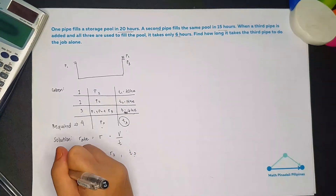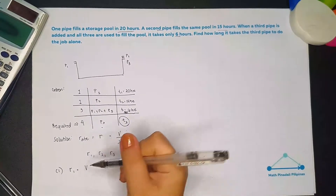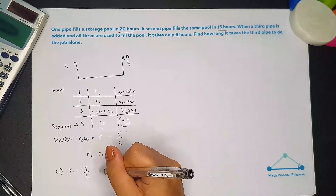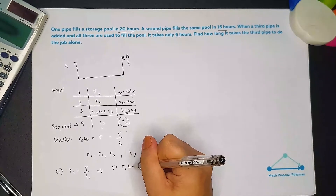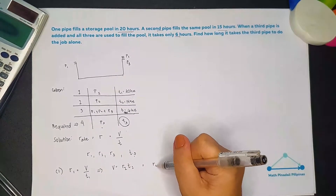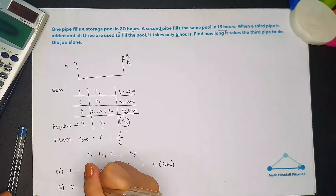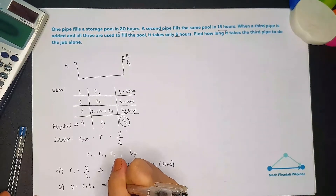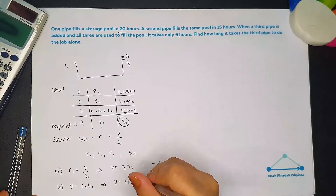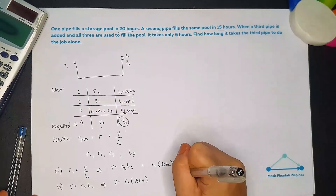We write an equation depending on our scenario. For equation one, rate one is equal to volume divided by T1. We rewrite this as V equals R1 times T1, where V is constant, so V equals R1 times 20 hours. For the second equation, V equals R2 times T2, where T2 is 15 hours.